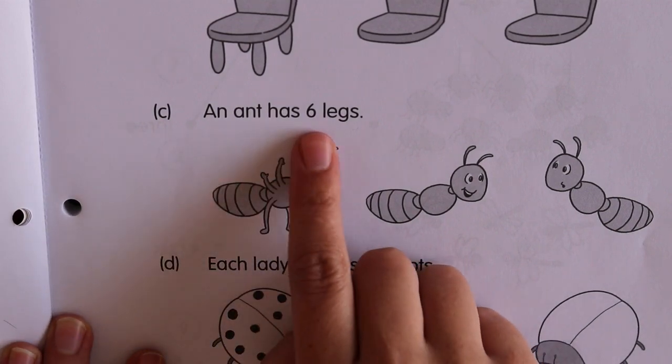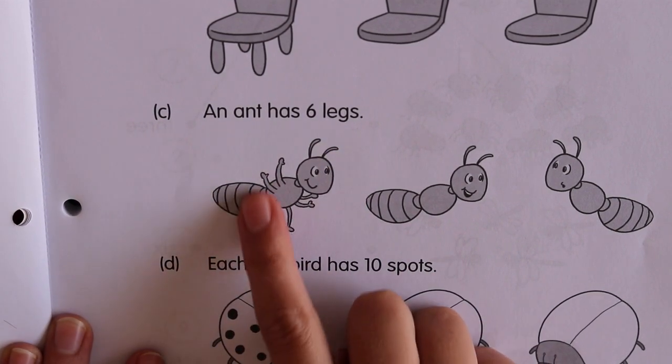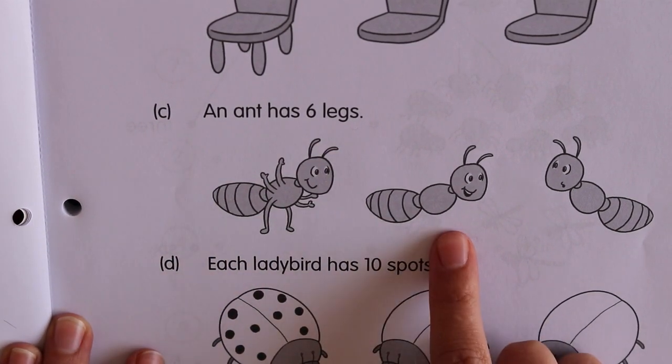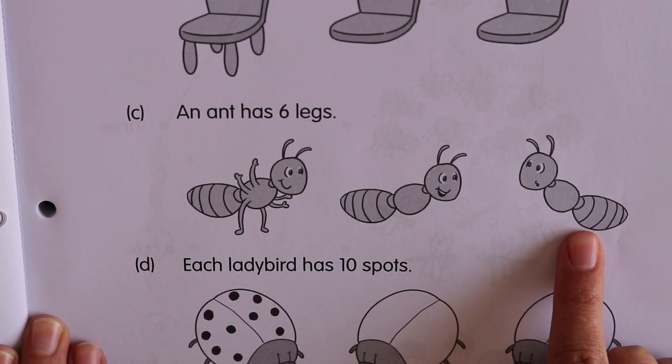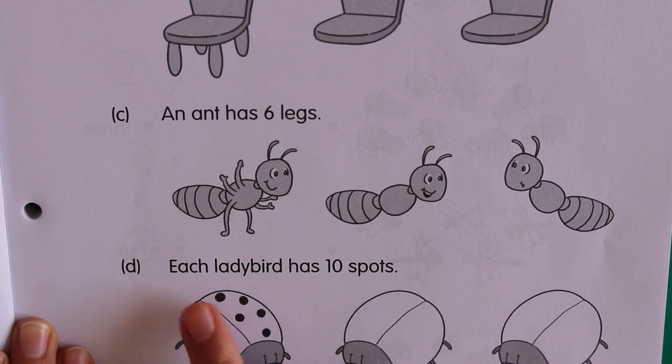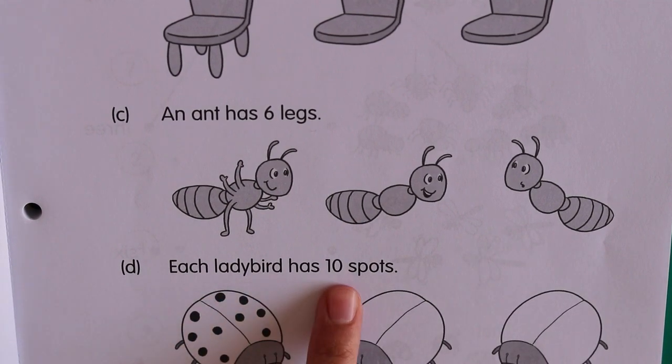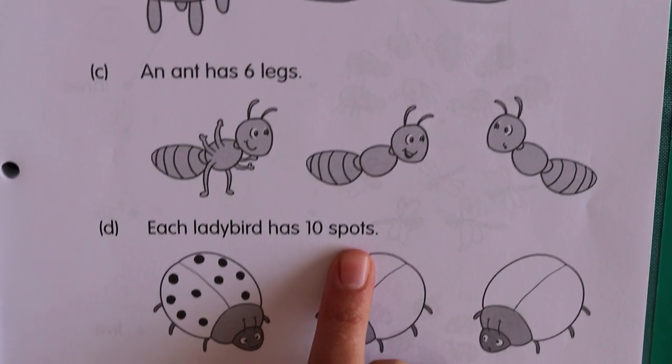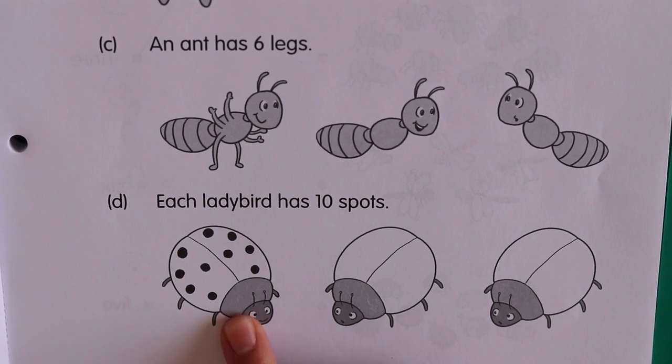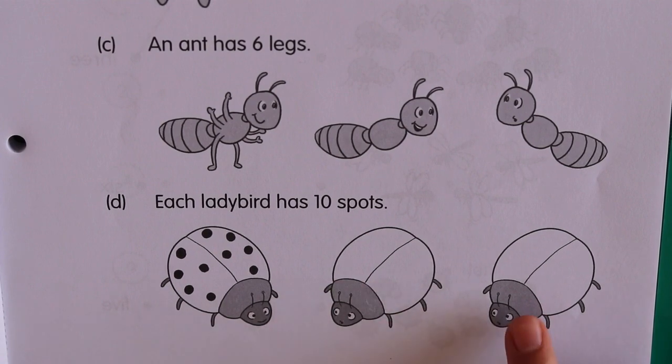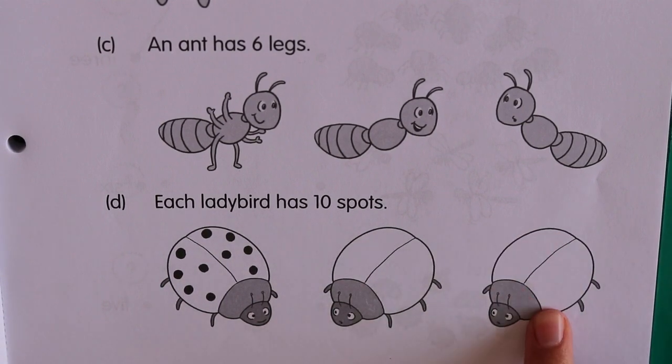An ant has six legs. This ant already has six legs. You have to draw six legs for this ant and six legs for this ant. Each ladybird has ten spots. Now, this one already has its ten spots. You need to draw ten spots for this one and ten spots for this one.